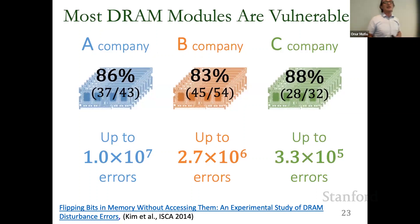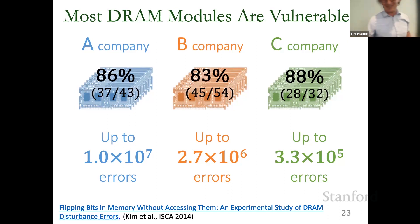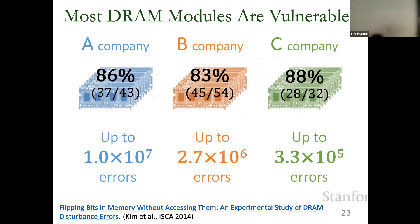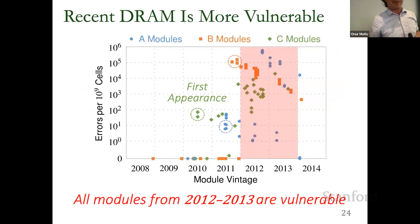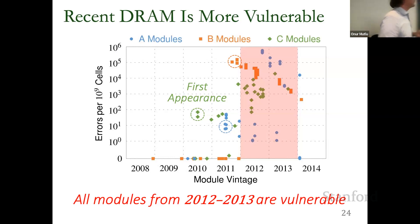We call the repeatedly-accessed row the aggressor row and the corrupted rows the victim rows. More than 80% of chips manufactured by the three major DRAM manufacturers are vulnerable. This is also a scaling problem: chips manufactured before 2010 were not susceptible, but chips from 2010 onward showed the first appearance of these bit flips, and all chips manufactured in 2012 and 2013 were well-known to be vulnerable.